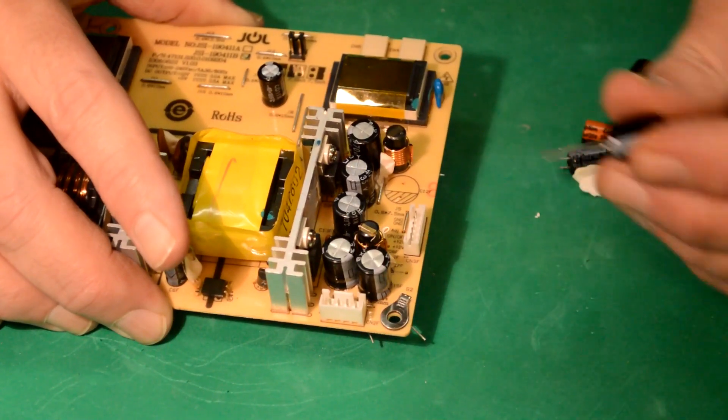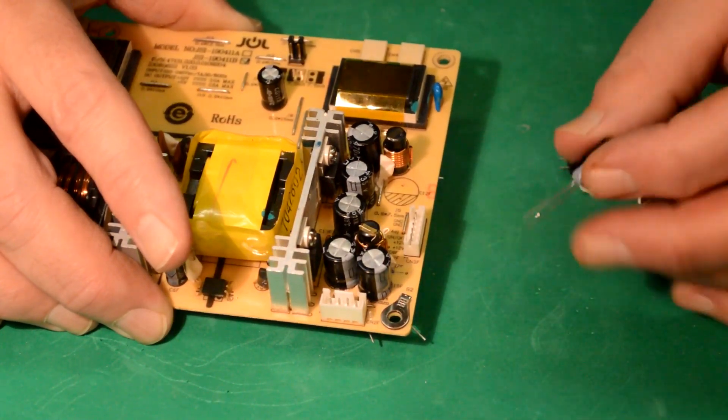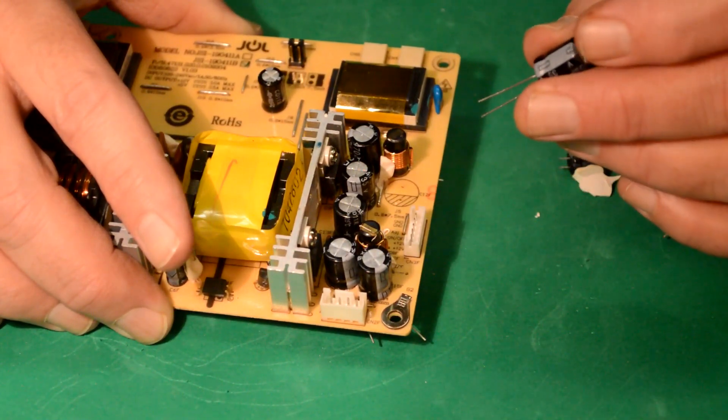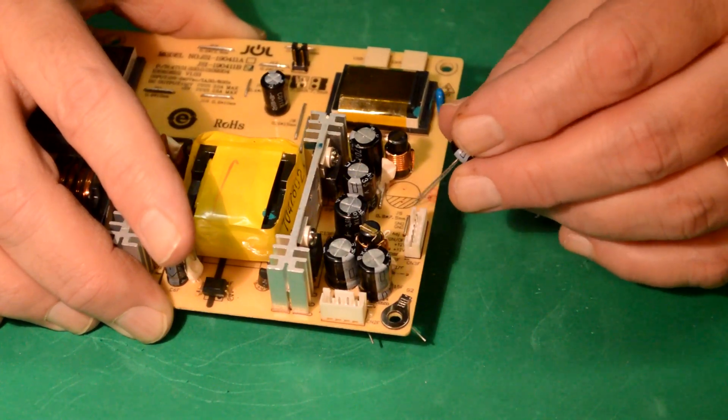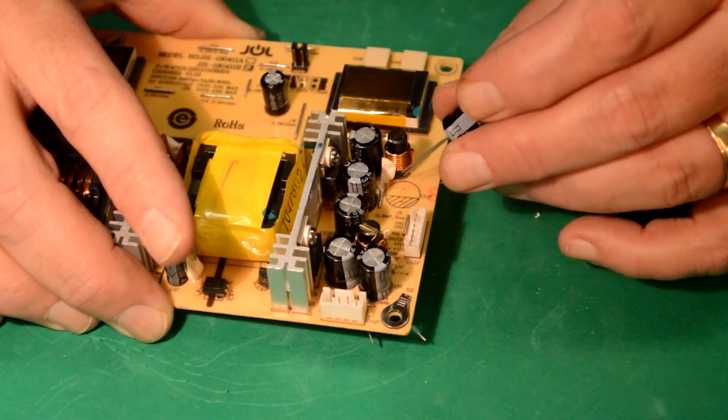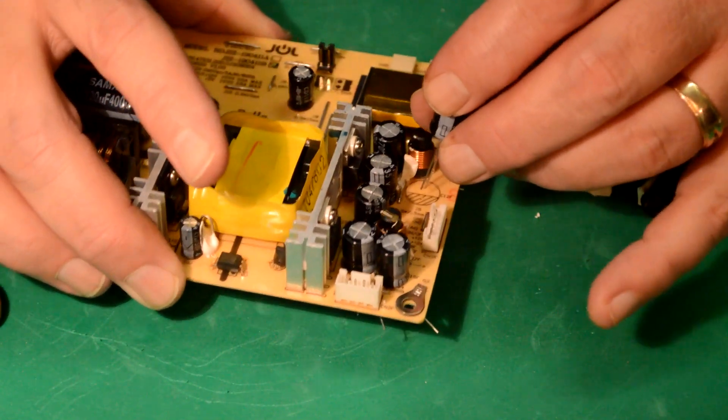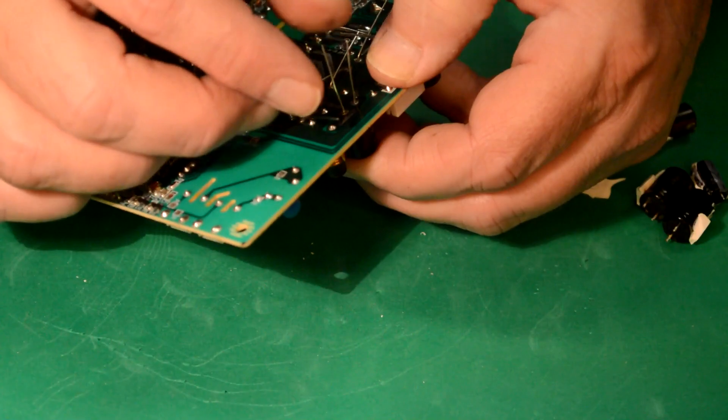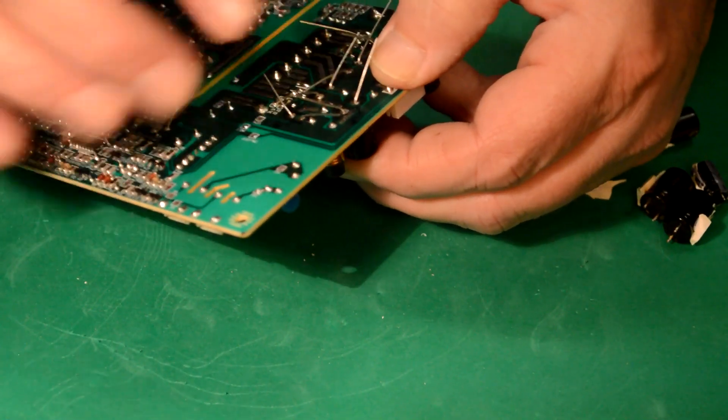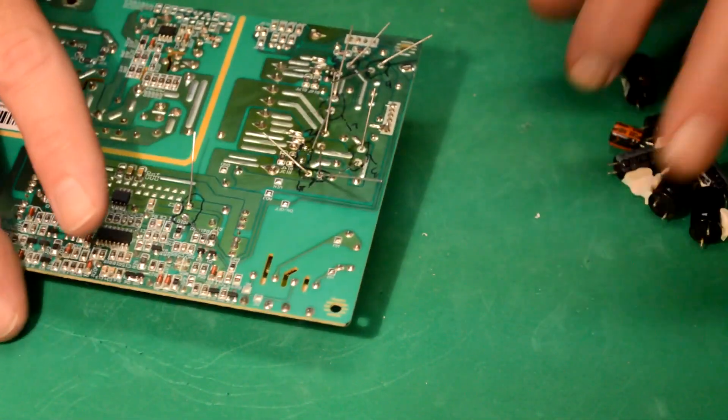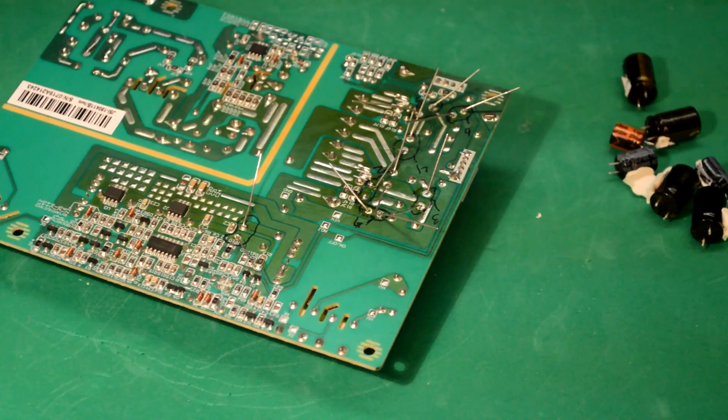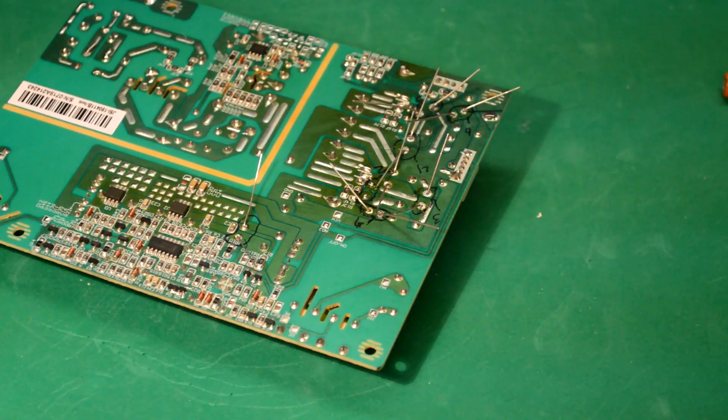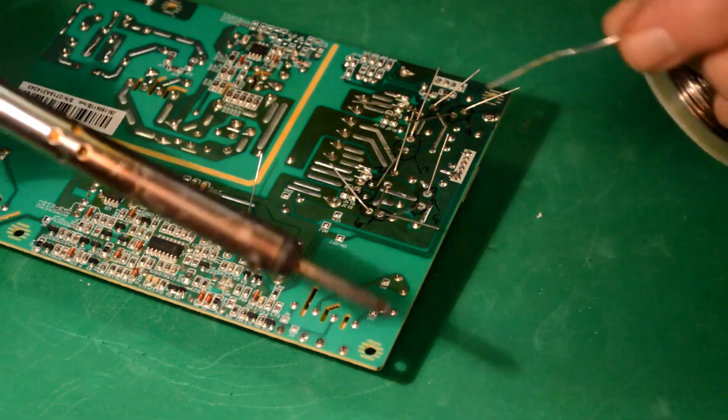I've put all the new caps in except for this one. I saved it to show you that you need to put the polarity symbol in the negative. This stripe line right down here, you want to make sure that that goes to there. It doesn't matter. Push it in, bend over the leads. And then just start putting them in.